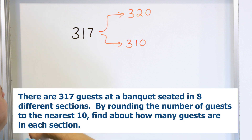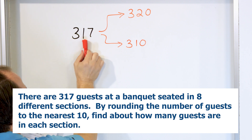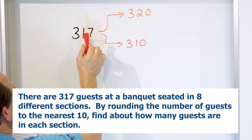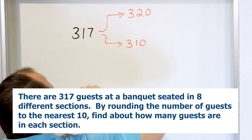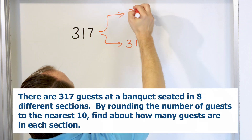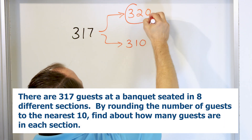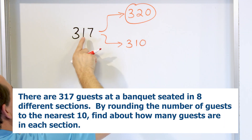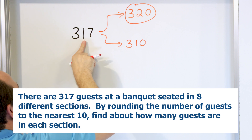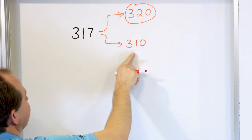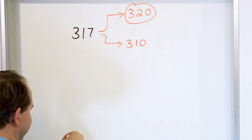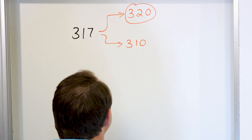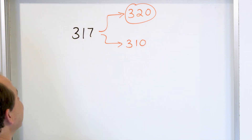How do I figure out which one? I look at the next digit. This is a seven. Anything five or greater means I'm going to round up. So I'm going to use this number to round. In other words, 317 is closer to 320 than it is to 310. So we're going to use 320 guests.